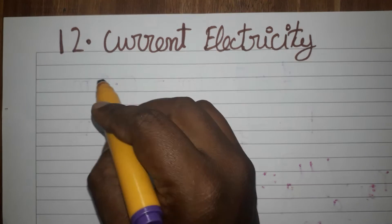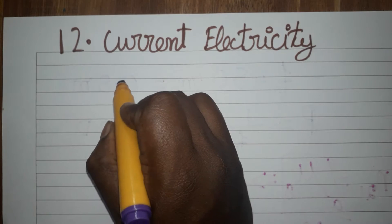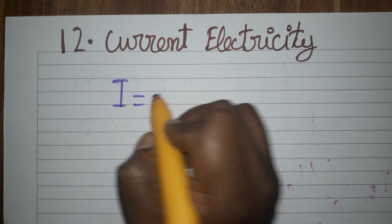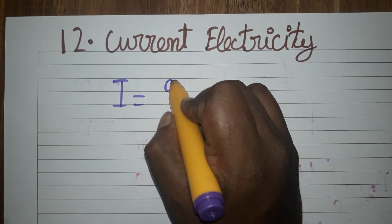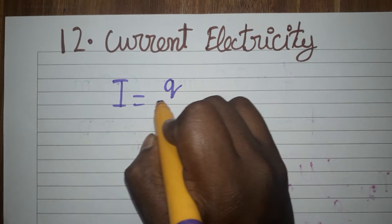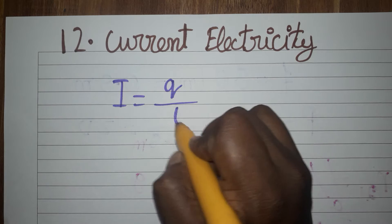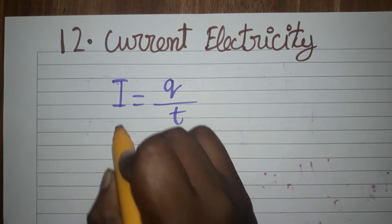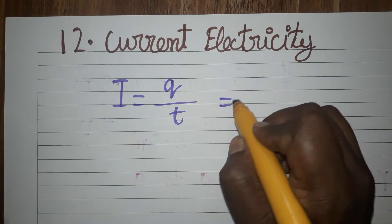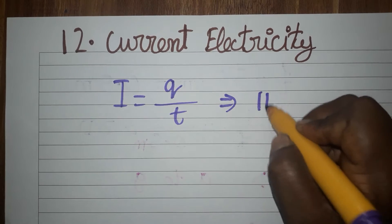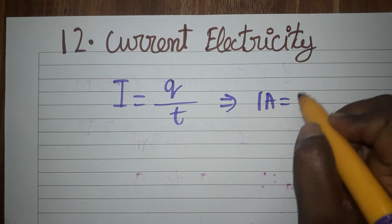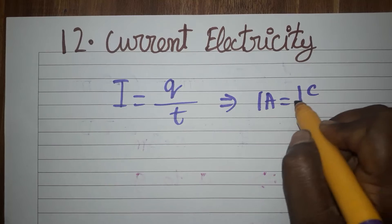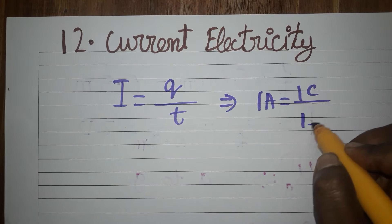The first thing: current is equal to charge per unit time. The unit of current is ampere, unit of charge is coulombs, and unit of time is second.